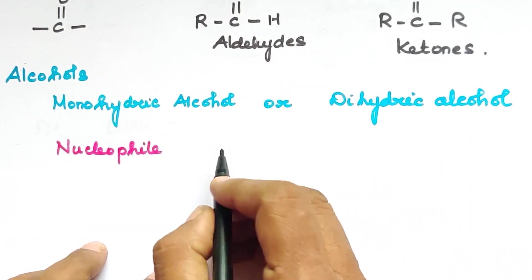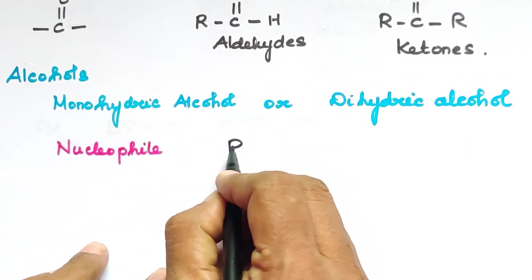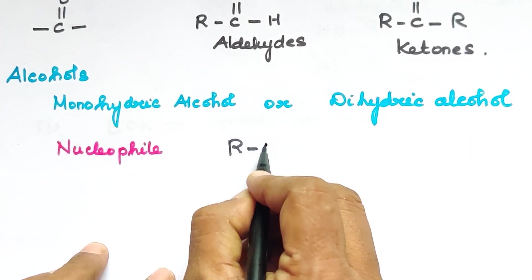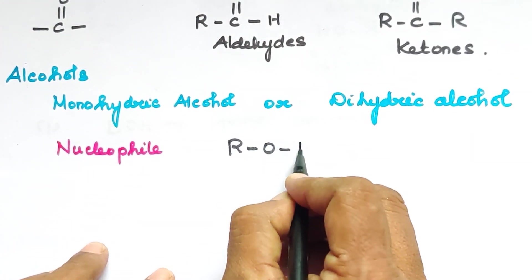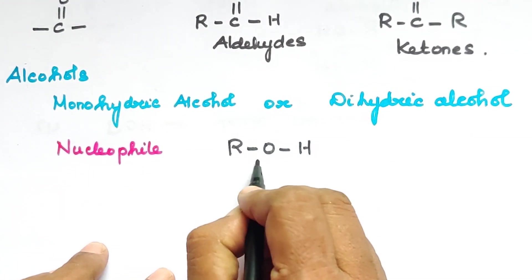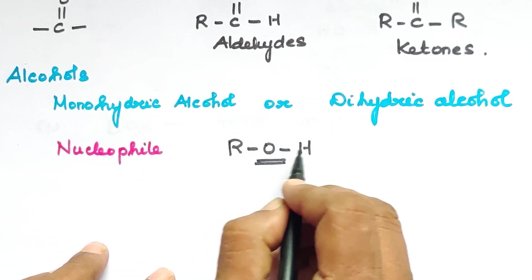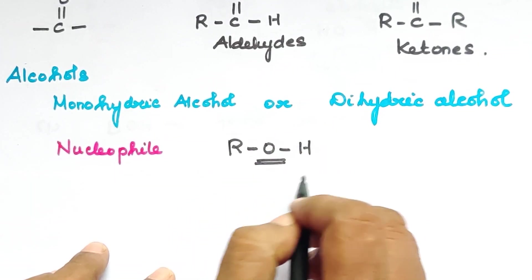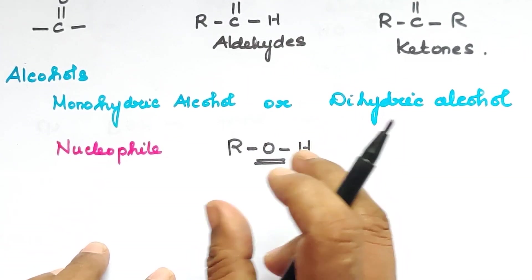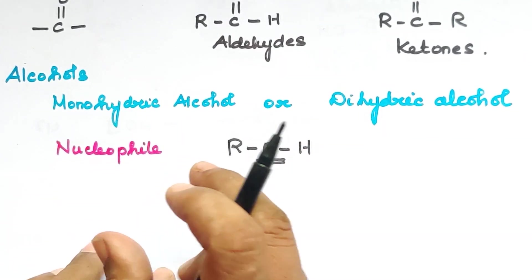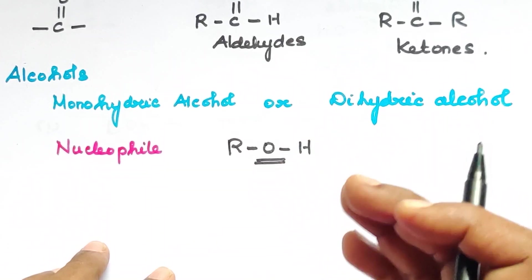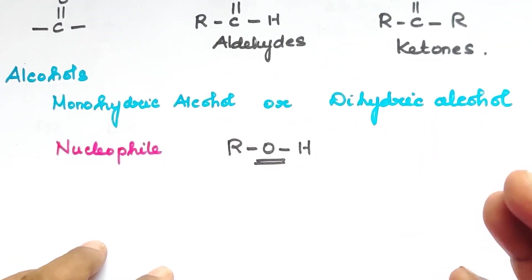Now let's talk about alcohols: R-O-H. This oxygen atom is the key feature. Alcohol can act as a nucleophile; that is, it will attack an electrophile.